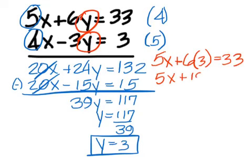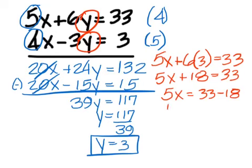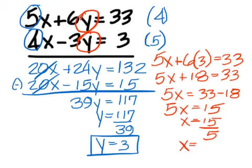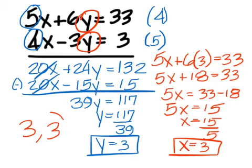You'll get an 18, which you have to move to the right side. Make it minus 18. Simplify to get 15. Divide to get 3. And your final answer should be 3, 3.